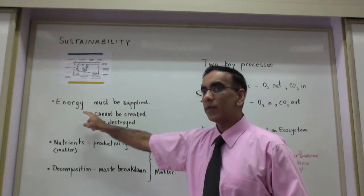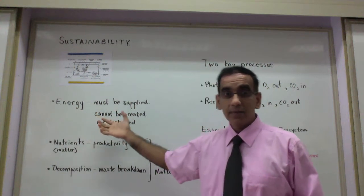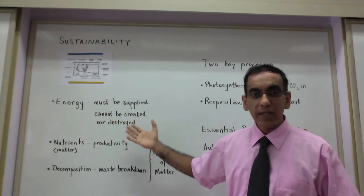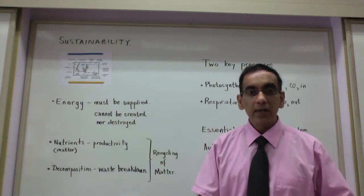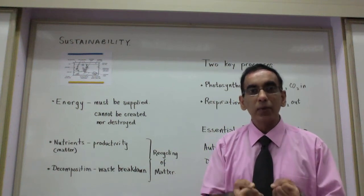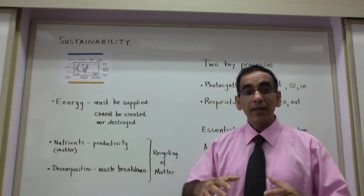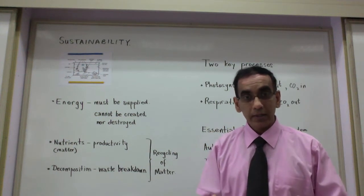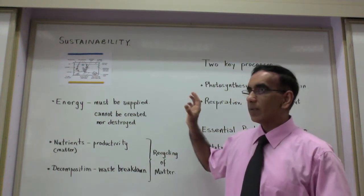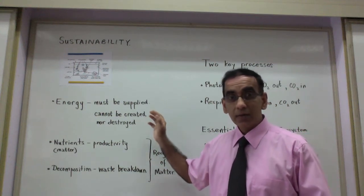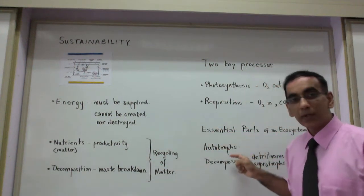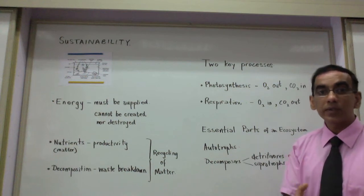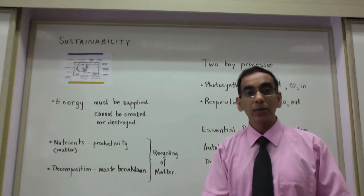We must ensure that there is a supply of energy, for in keeping with the first law of thermodynamics, there is no way that energy can be created from within the system, or that any of the energy that enters the system from the outside can be destroyed. So a supply of light energy for the autotrophic organisms, or the producers, is absolutely essential.